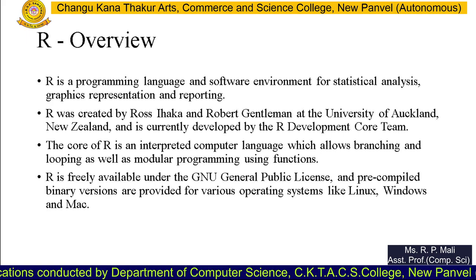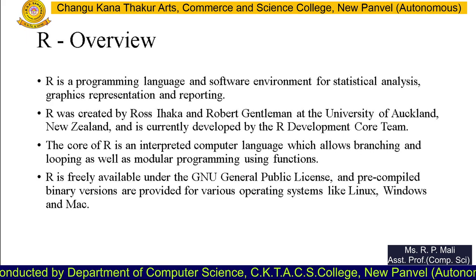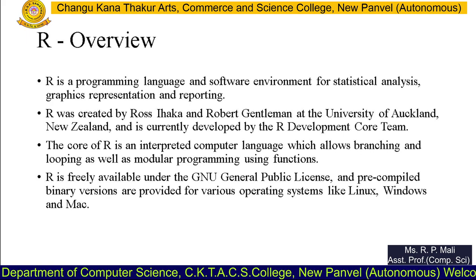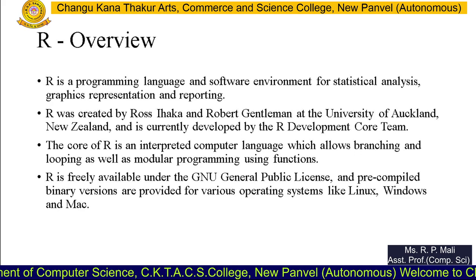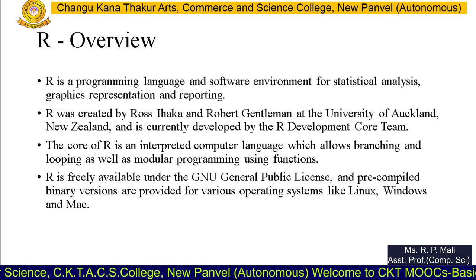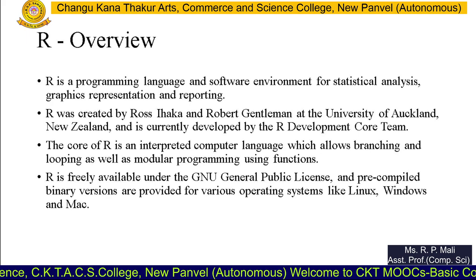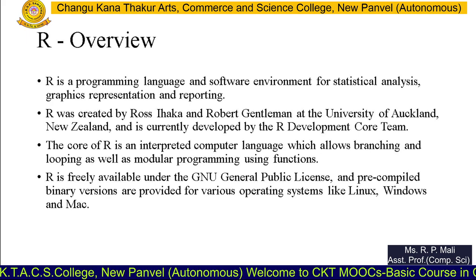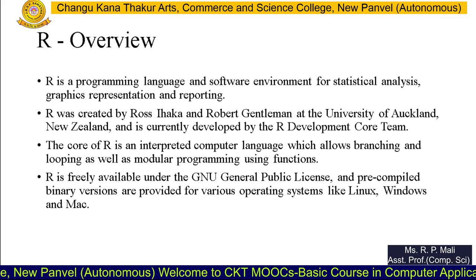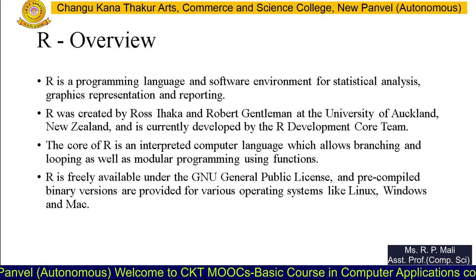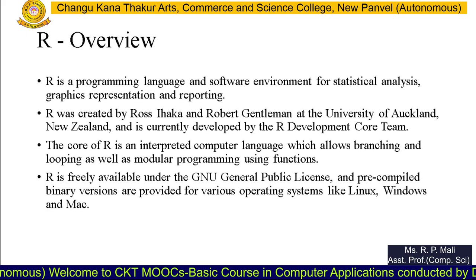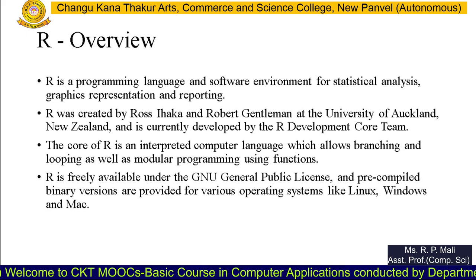The core of R is an interpreted computer language which allows branching and looping, as well as modular programming using functions. R is freely available under the GNU General Public License and pre-compiled binary versions are provided for various operating systems like Linux, Windows, and Mac.